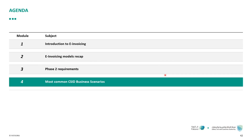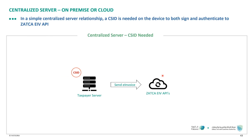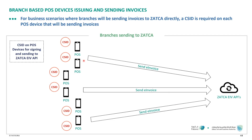Now looking at the most common cryptographic stamp business scenarios: the most basic scenario is a taxpayer with a single server generating and sending invoices to ZATCA — that server needs to acquire a CSID. Another example is a taxpayer with multiple points of sale, each generating and sending invoices to ZATCA. Each individual point of sale must acquire a unique CSID — no two devices share the same CSID — so each point of sale must go through the onboarding steps.